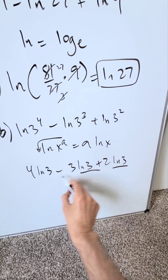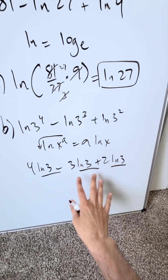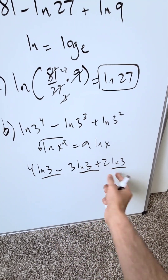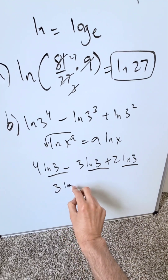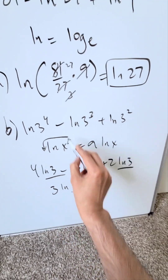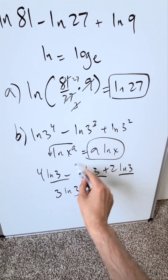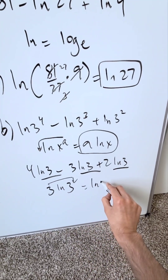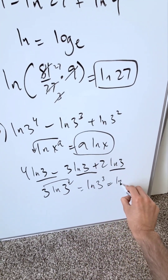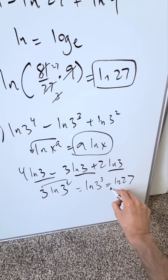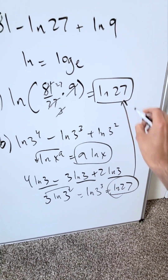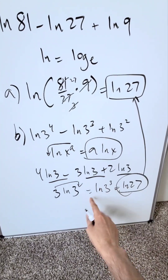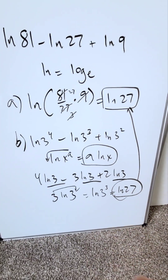These are all similar items, so you can do the common arithmetic. It's like doing 4 minus 3 plus 2, which gives 3. So you get 3 natural log 3. Applying the power property in reverse gives natural log 3 cubed, which is natural log 27 — confirming our earlier result. Obviously method one is easier, but both are correct.